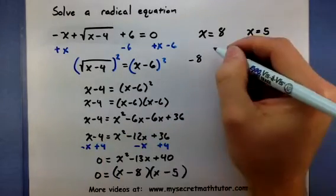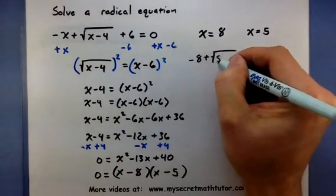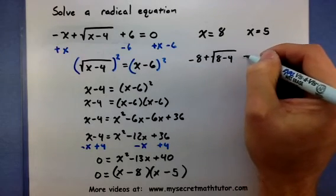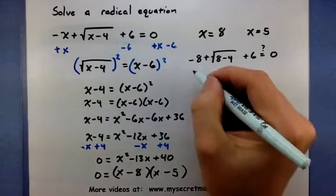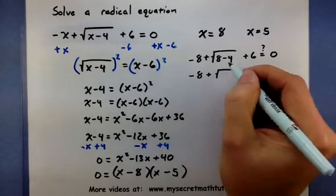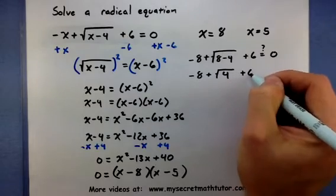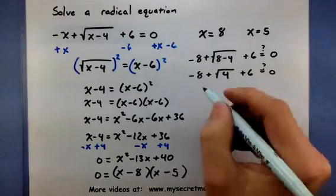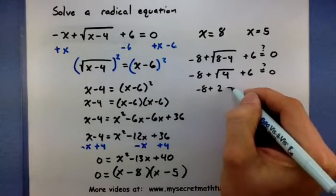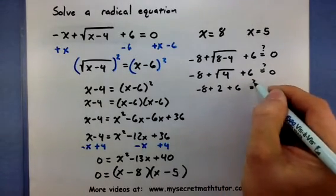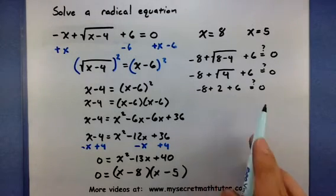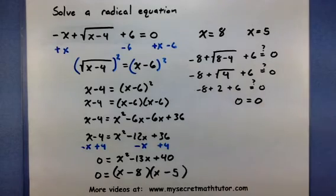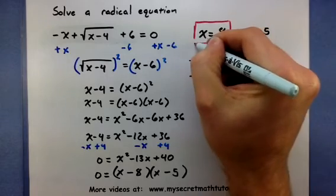So negative 8 plus the square root of 8 minus 4 add 6. So I'm checking if this really does equal 0. So negative 8 plus the square root of 8 minus 4 is 4. Negative 8 plus the square root of 4 is 2. So I have negative 8 plus 2 is negative 6 plus 6. Sure enough, 0 does equal 0. So it means that we will keep this solution. It works in the original.